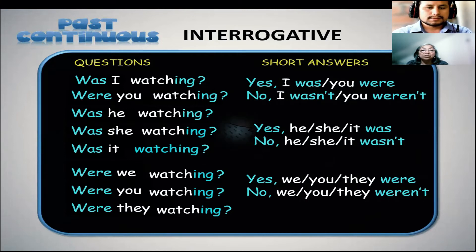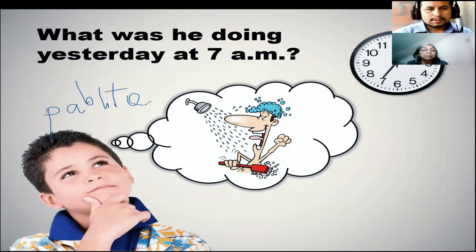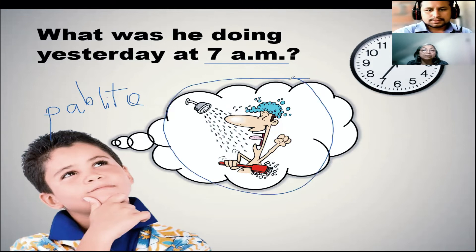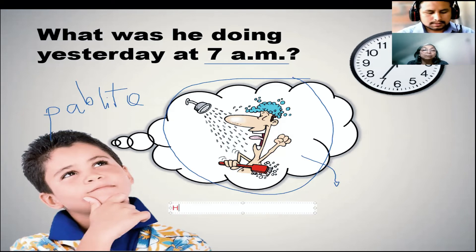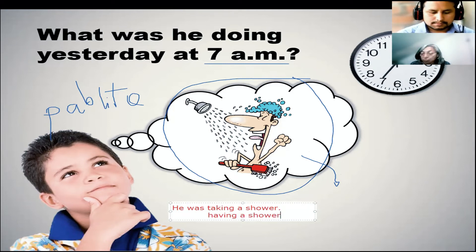Now with that in mind, let's go through this activity. What was he doing yesterday at 7 a.m.? We can call this boy Pablito. What was he doing yesterday at this time? Can you help me? We can see this bubble, and that bubble expresses something in particular. He was taking a shower. Or we can use a different verb: he was having a shower. Both are correct — he was taking a shower, he was having a shower.